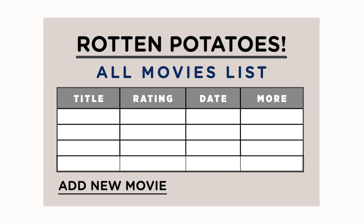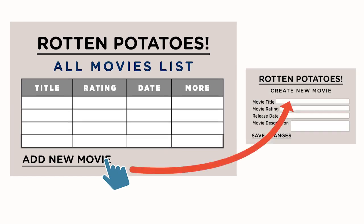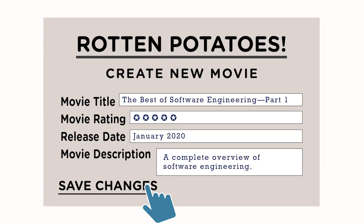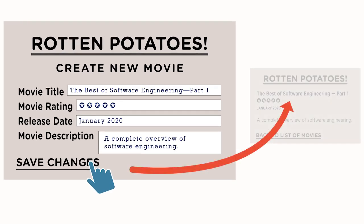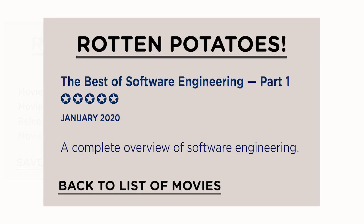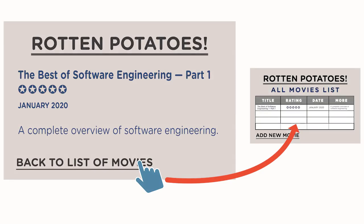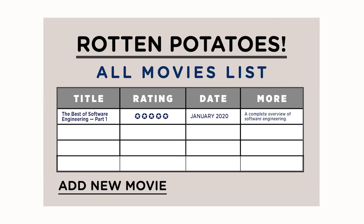Just like the storyboards of a movie, the transitions between these drawings would be triggered by user actions. For example: given I am on the Rotten Potatoes home page, when I click the add new movie link, then I should be on the page to create a new movie. When I fill in the movie details and click Save Changes, then I should be on a page showing the details for the new movie I just created. When I click back to list of movies on that page, then I should be back on the home page.